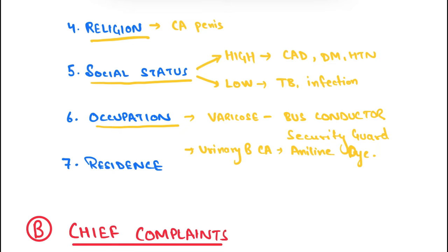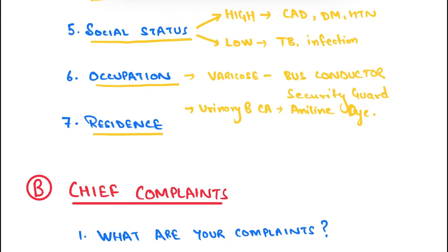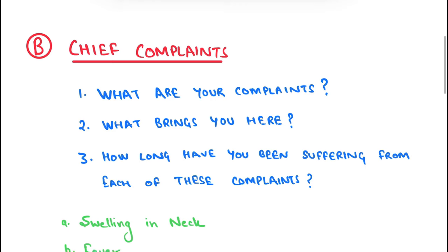Residence is also important because there are certain diseases which are region-specific. For example, Japanese encephalitis is more common in Uttar Pradesh and Bihar, and filariasis is common in Odisha. So you have to ask about the residence of the patient.